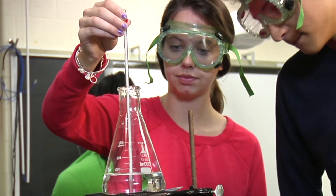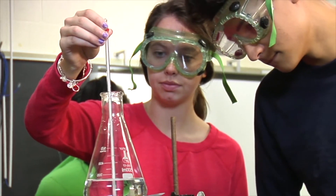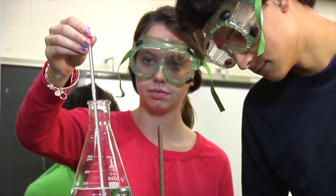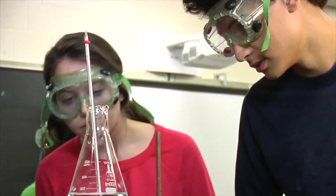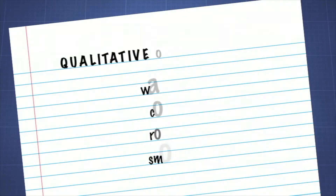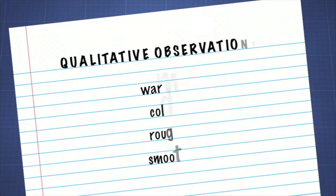Precautions may be needed when observing certain experiments, such as chemical reactions. Qualitative observations use descriptive words, such as whether a substance is warm, cold, rough, smooth, and so on.